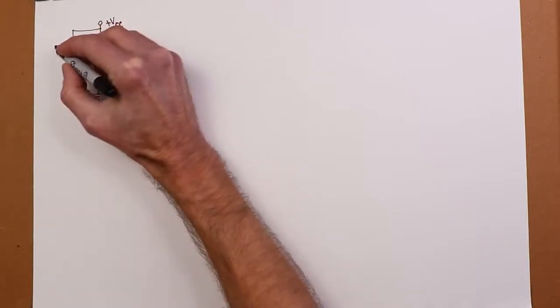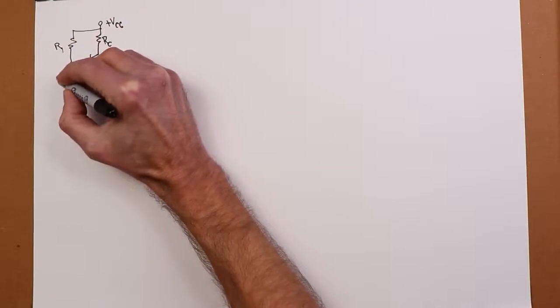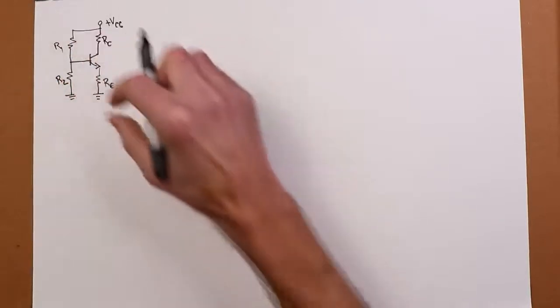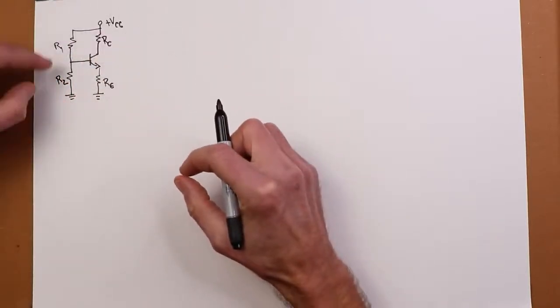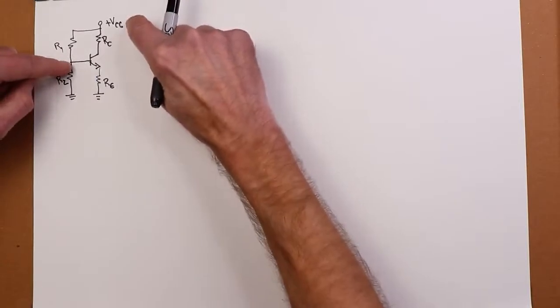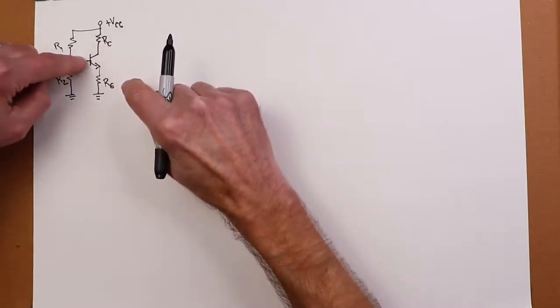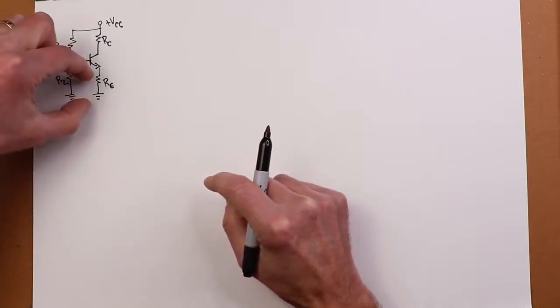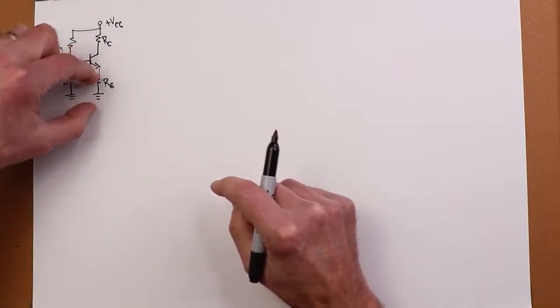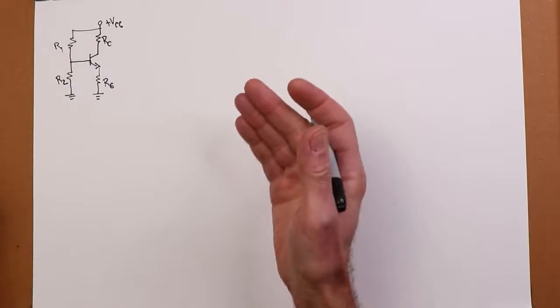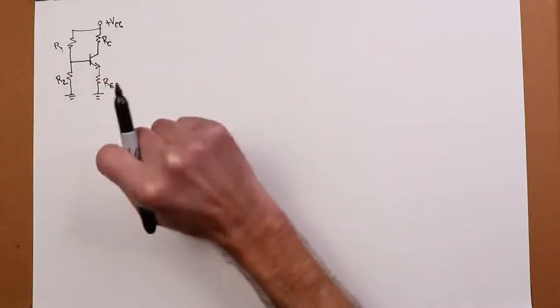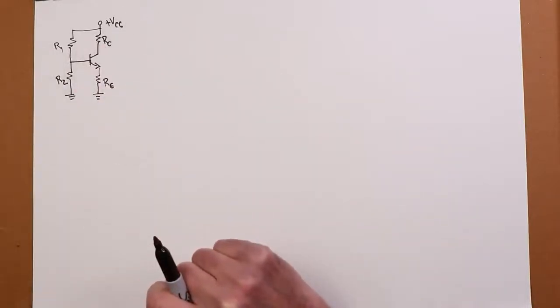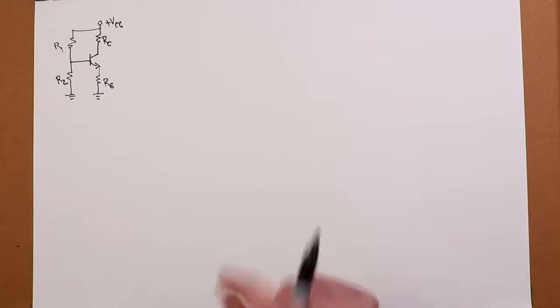And we'll just name these two resistors R1 and R2. So what's going to happen here is this divider will set up a potential, some fraction of VCC, that sits on the base. We have our drop on the base emitter, and the remainder will fall on the emitter resistor, which will set up the emitter current. And of course, emitter and collector currents are virtually the same.